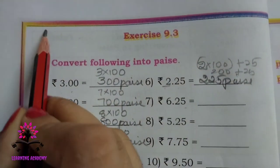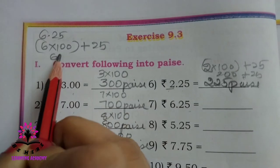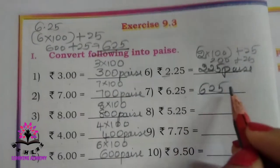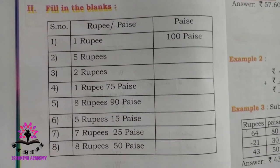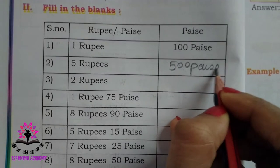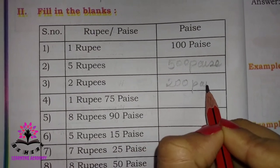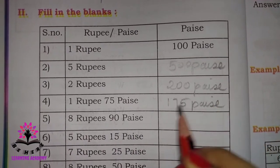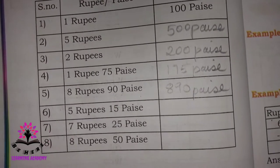6 rupees 25 paisa: (6 × 100) + 25 = 600 + 25 = 625 paisa. The remaining 3 problems, do by yourself. Roman II — Fill in the blanks: 5 rupees = 500 paisa, 2 rupees = 200 paisa, 1 rupee 75 paisa = ₹1.75, 8 rupees 90 paisa = ₹8.90. Remaining 2, do by yourself.